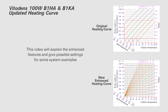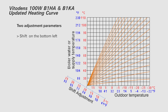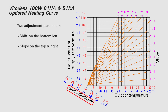The chart contains two main axes: outdoor air temperature and boiler water temperature, and two adjustment parameters: shift on the bottom left and slope on the right and top side.